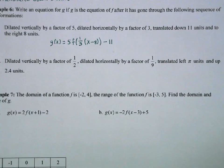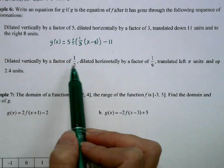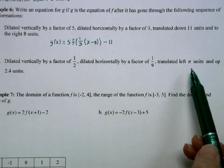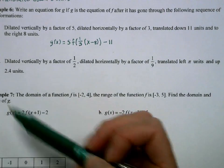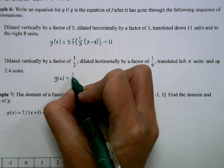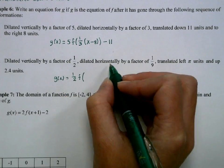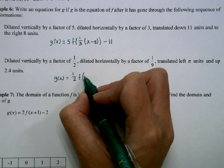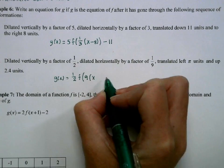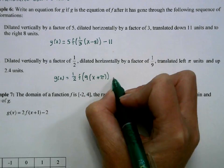For the next example: dilated vertically by a factor of 1 half, dilated horizontally by a factor of 1 ninth, translated left pi units, and up 2.4 units. We'll have 1 half out front. If our horizontal dilation is 1 ninth, then we have a 9 inside. Translated left means we're adding pi to our x, and we're going up 2.4.